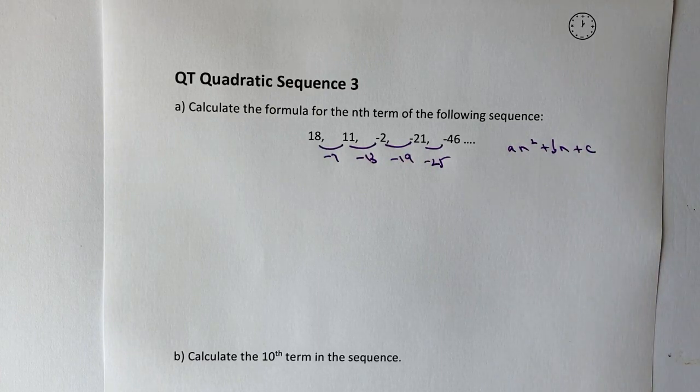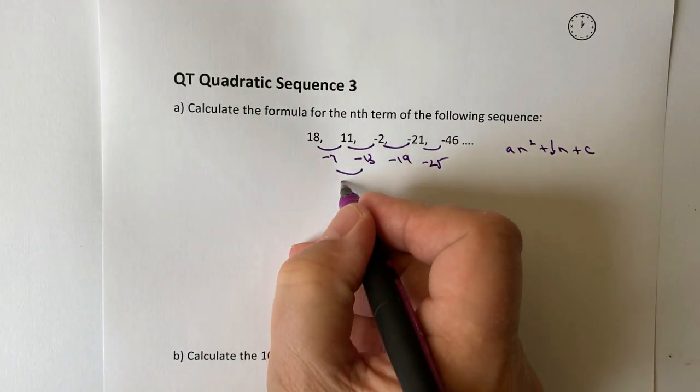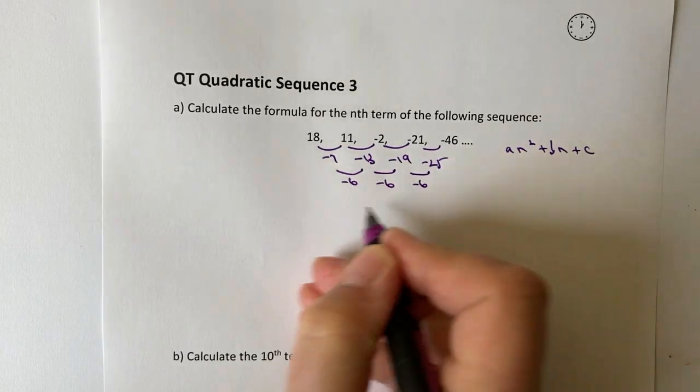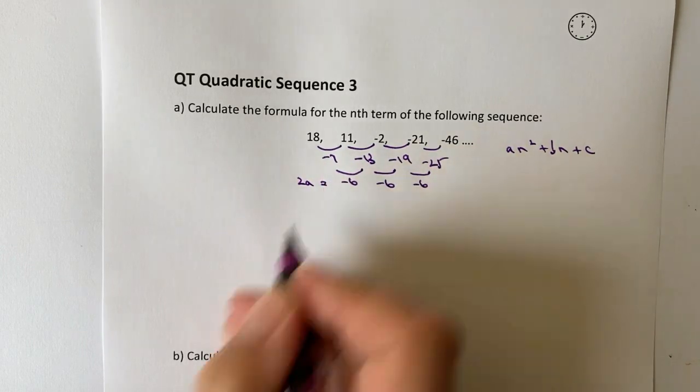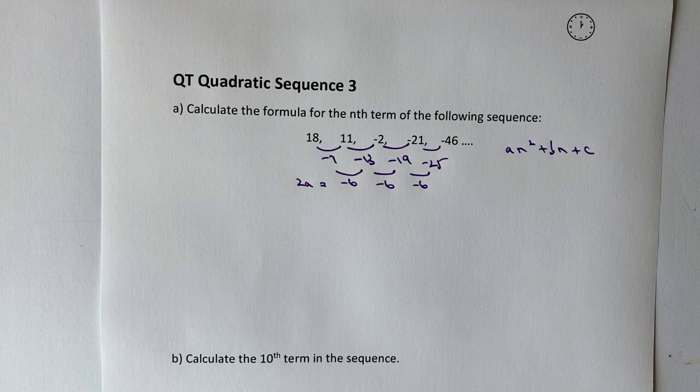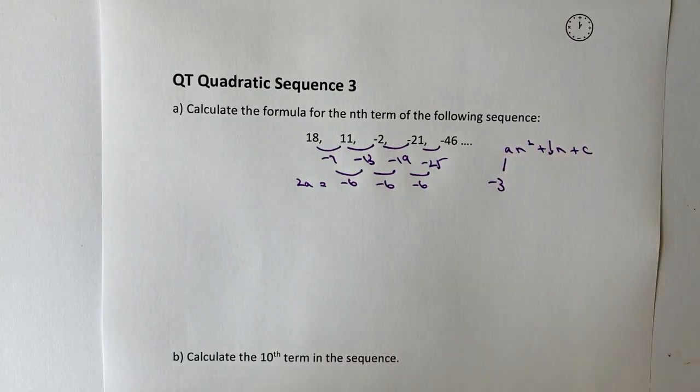So the value of a is relatively straightforward to find because effectively it's half of the second difference, which in this particular case is minus 6. So what we're saying is this minus 6 is the equivalent to 2 lots of a, so if it's the equivalent to 2 lots of a, then 1 lot of a would make that minus 3.